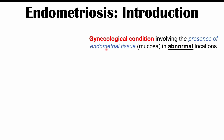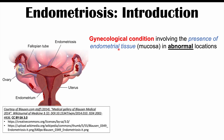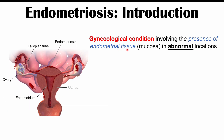Endometriosis is a gynecological condition involving the presence of endometrial tissue or endometrial mucosa in abnormal locations. What should be the case is that this endometrial tissue should be on the inside of the uterus — the endometrium is the inner lining of the uterus. But in endometriosis, this endometrial tissue is in places where it shouldn't be.